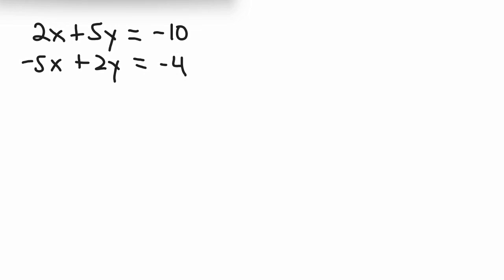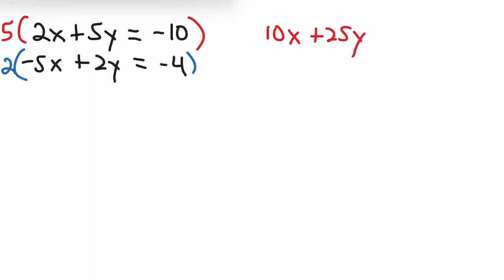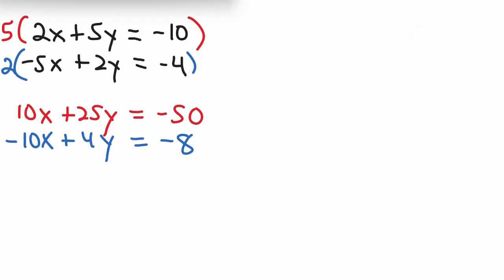Here's another problem. What variable should we eliminate — x or y? There's actually no advantage to either x or y on this one, so I'll just eliminate x. We need to multiply the top equation by 5 and the bottom equation by 2. So: 5 times 2x is 10x, 5 times 5y is 25y, 5 times negative 10 is negative 50. Then 2 times negative 5x is negative 10x, 2 times 2y is 4y, and 2 times negative 4 is negative 8.